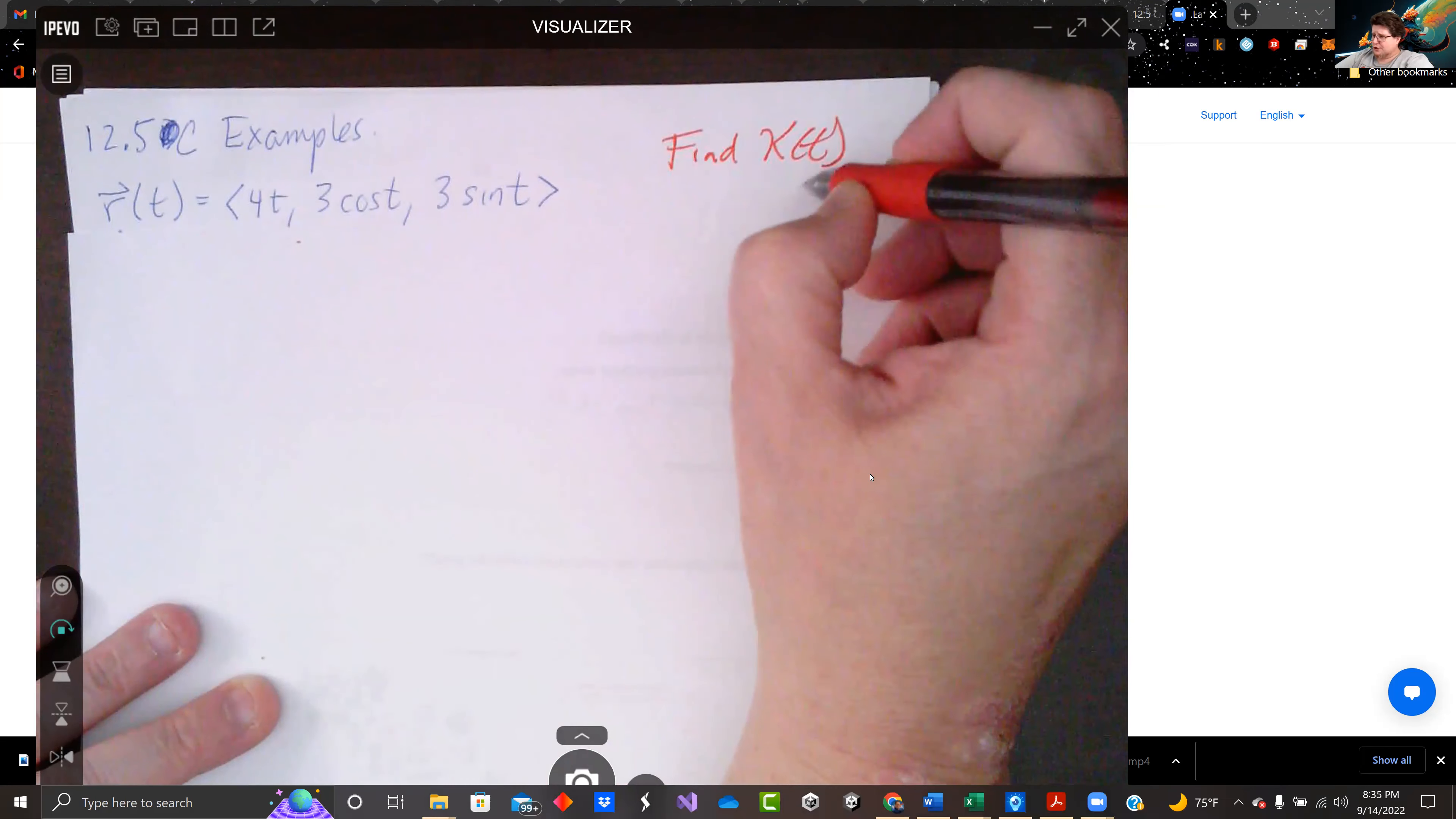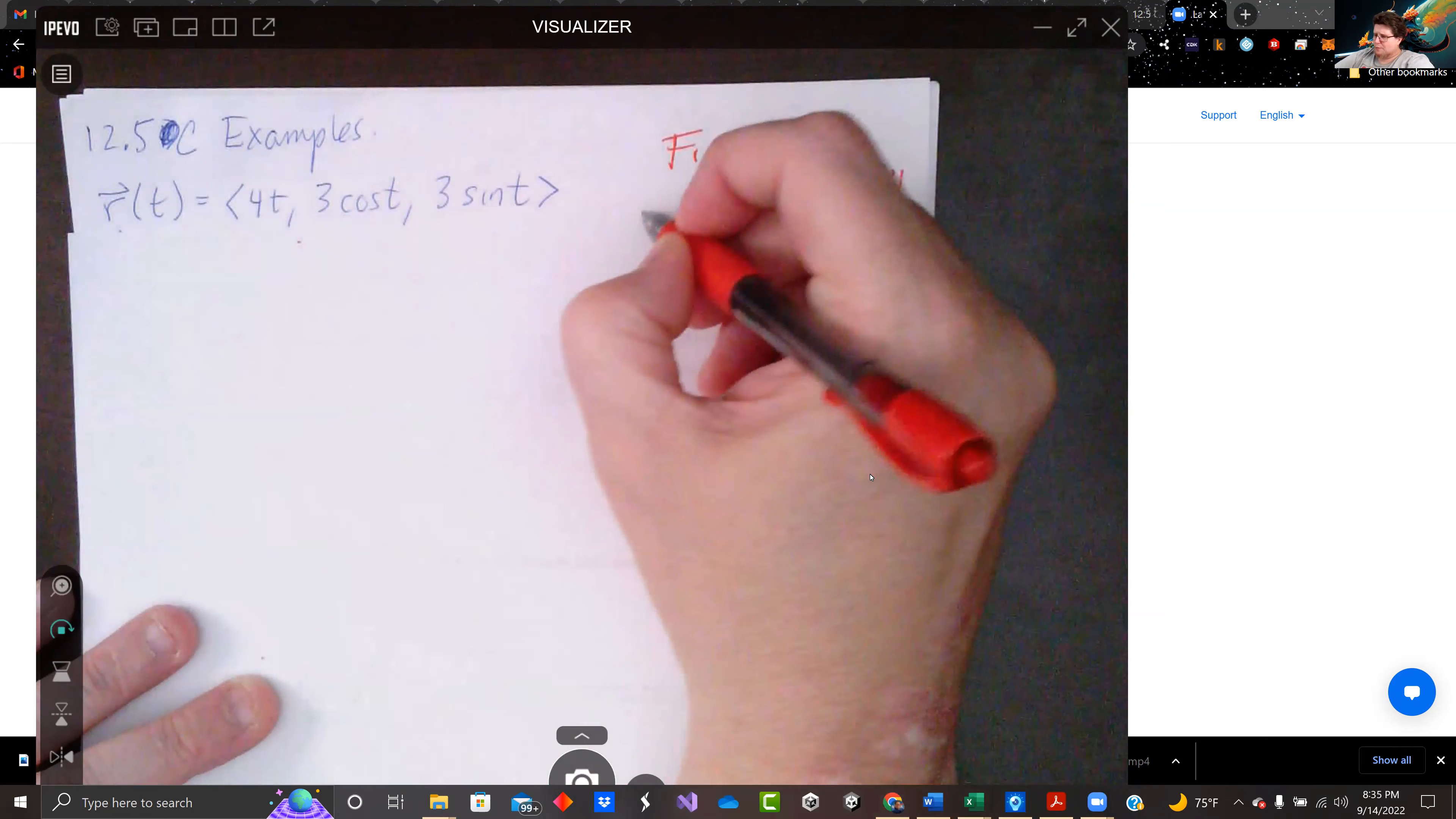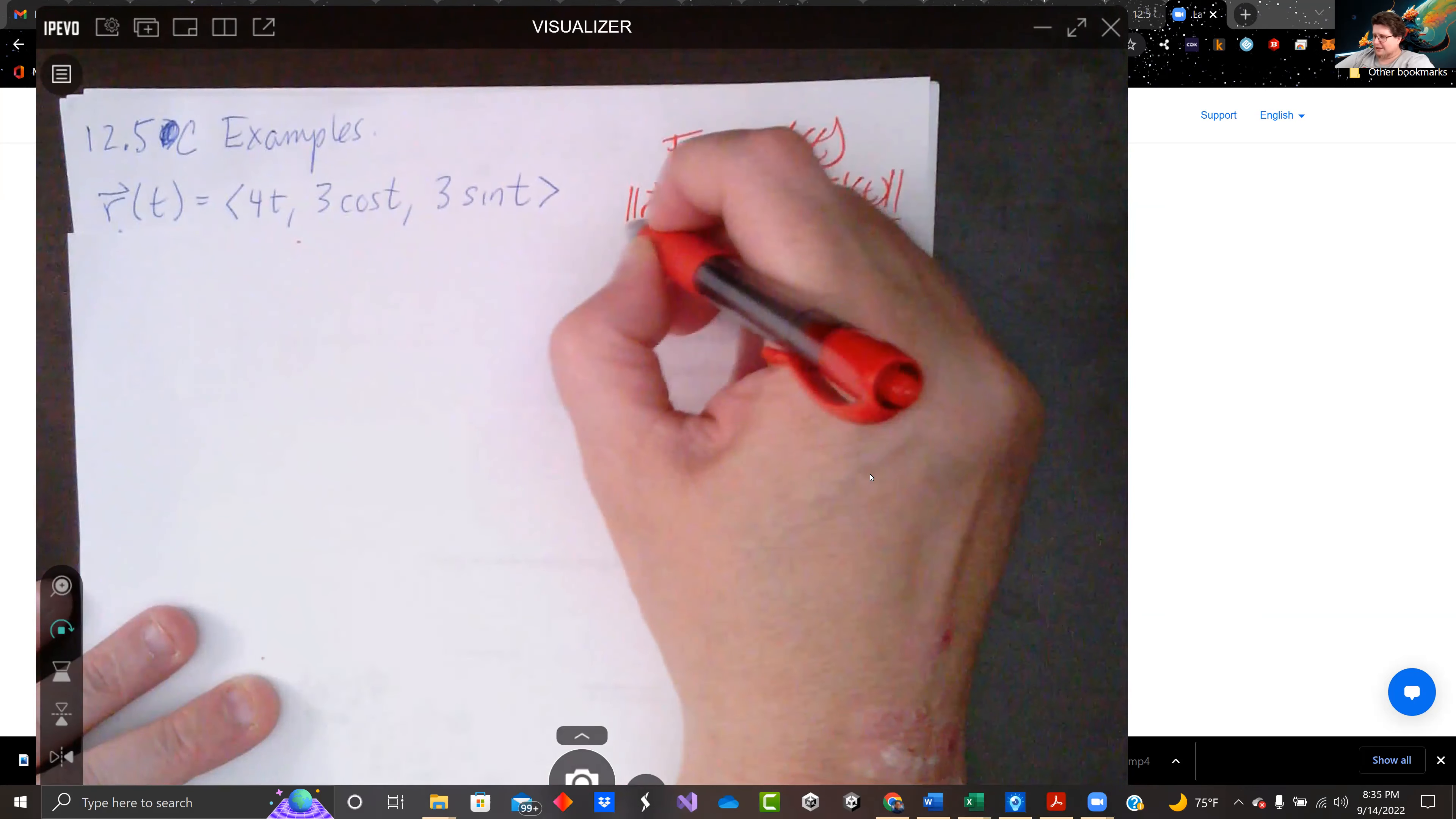We can do T prime of t, the magnitude over the magnitude of r prime of t, or we can do magnitude of r prime cross r double prime, again with the t's, but I didn't leave myself a lot of room to write this.